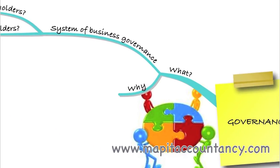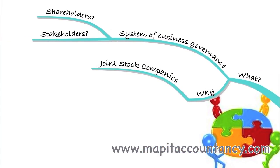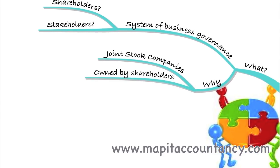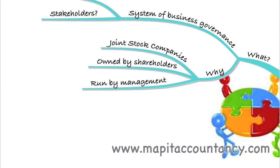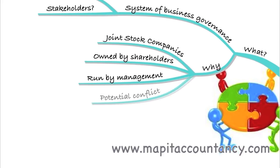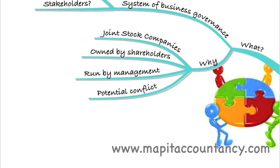So why do we need to do this? Because there are joint stock companies. Joint stock companies are companies that are owned by the shareholders and run by management. Therefore we have a potential conflict, and we'll look at this when we look at the agency problem in corporate governance — the potential problem being that shareholders and management have interests that are not the same.